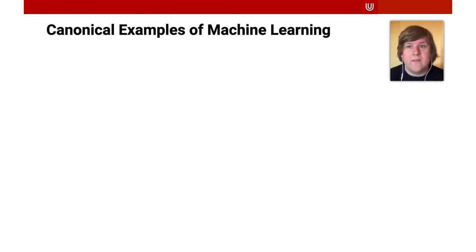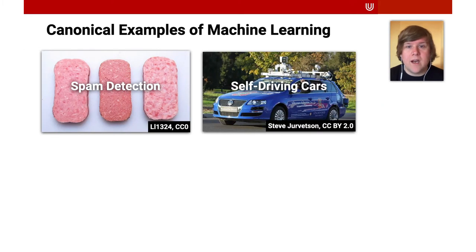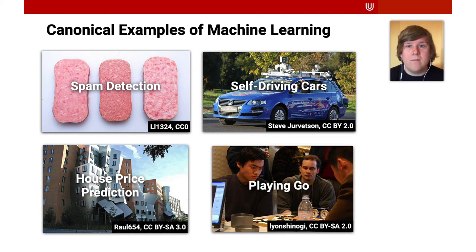We also identified a number of canonical examples that are frequently mentioned in machine learning tutorials. These include the detection of spam, self-driving cars, the prediction of housing prices, and playing the game Go.